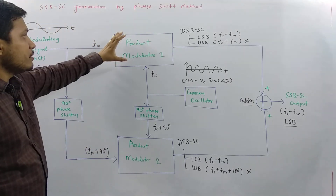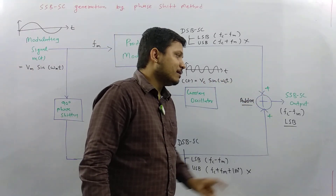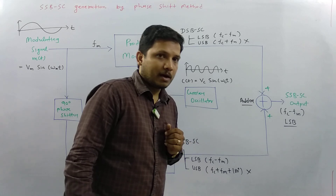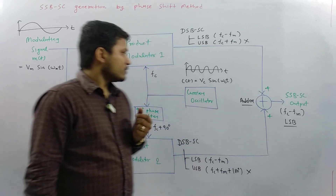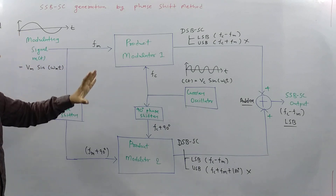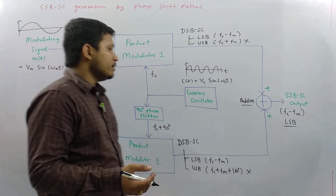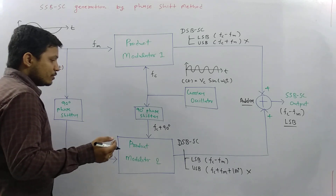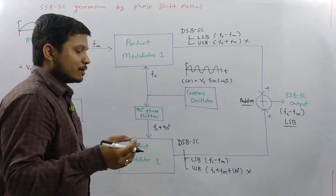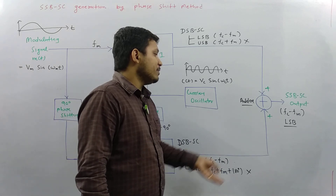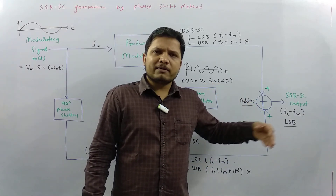Using this phase shift method we have two product modulators, and by applying the appropriate phase shifts we generate the SSBSC signal at the output without using any filter — only phase shifters are needed. At the output we get Fc minus Fm, the lower sideband. If you want the upper sideband, simply apply the opposite phase shift, which will cancel the lower sideband and preserve the upper sideband instead.